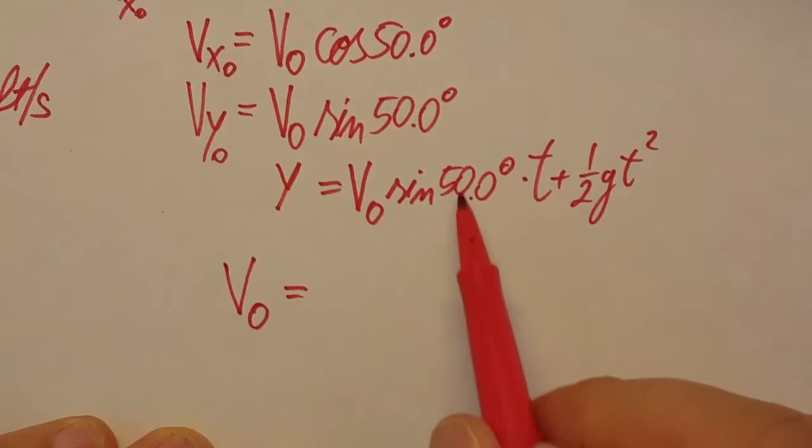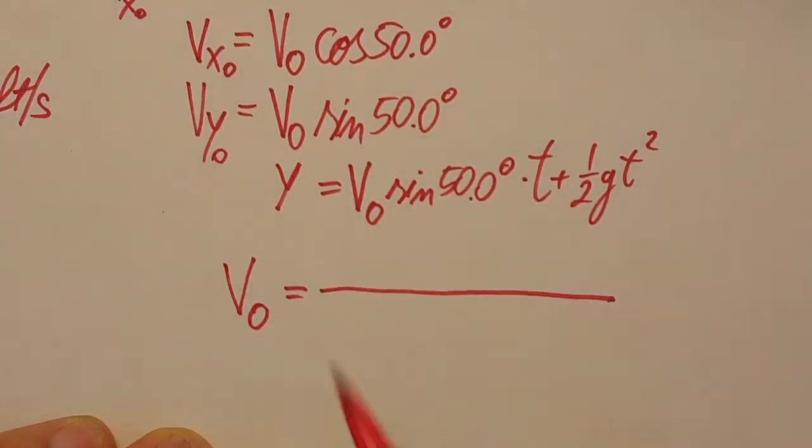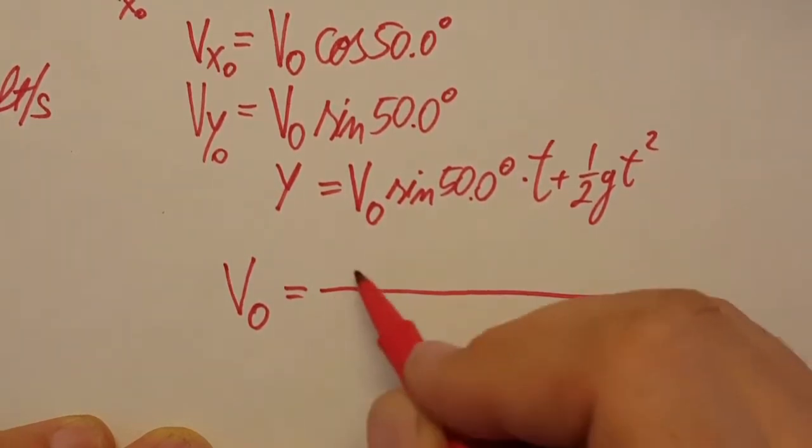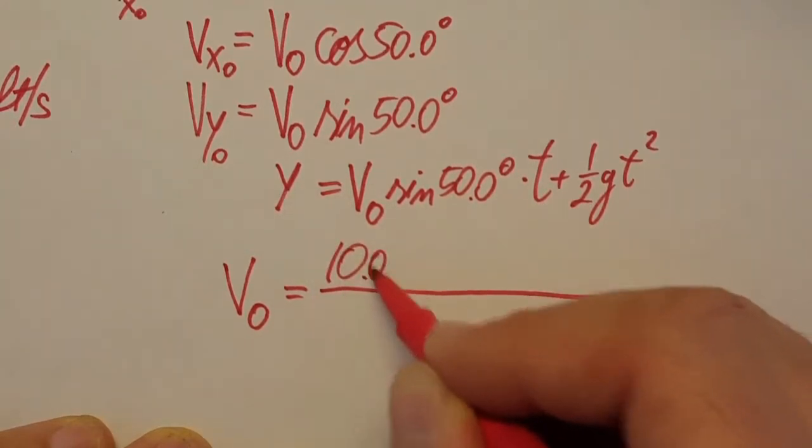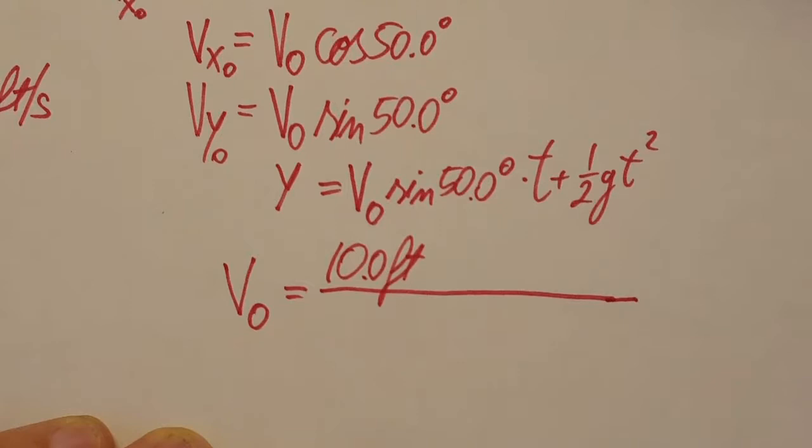V naught equals this term comes to the other side together with this and then we're gonna divide it by these. I'm gonna go ahead and plug in right away so we don't waste too much space over here.